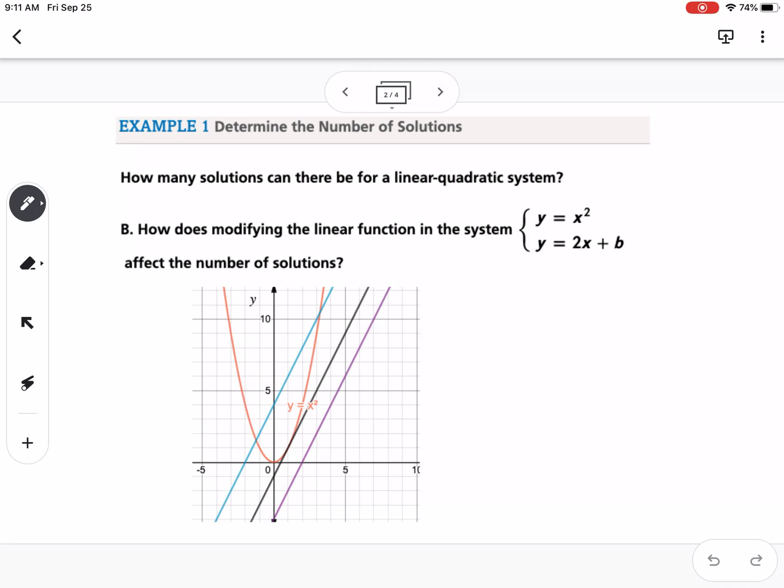So for this first example, it says, how many solutions can there be for a linear quadratic system? So this illustration talks about how we can have a different y-intercept for our linear function that could create three different situations.